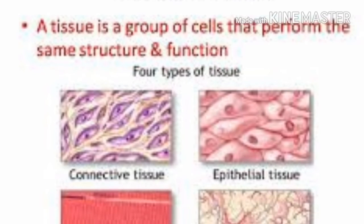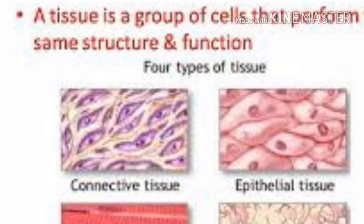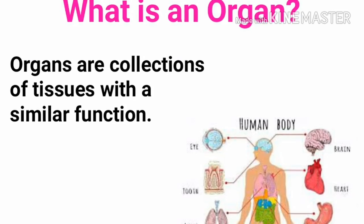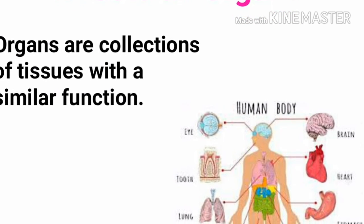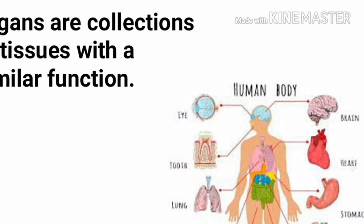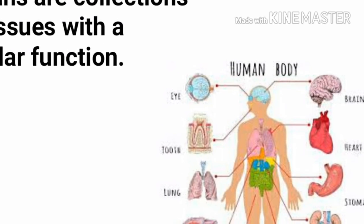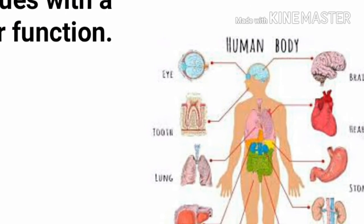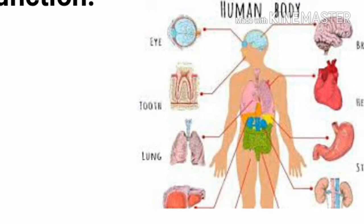A tissue is a group of cells that perform the same structure and function. An organ is made up of two or more tissues performing a similar function within the location of the organism. Examples of organs in plants are leaves, branches, and roots, while in animals they include the kidneys, lungs, heart, and liver.